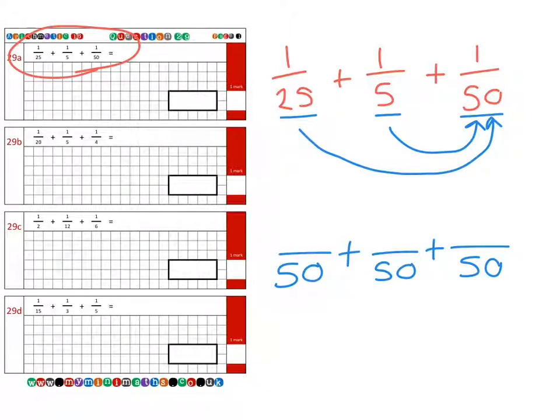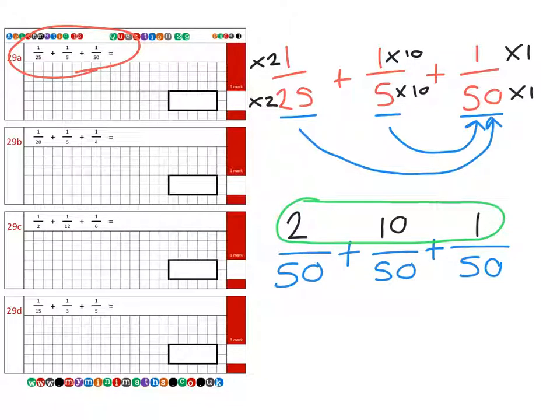Now, if we look at the first fraction, we multiply the 25 by 2 to get to 50, so we need to do the same with the top. So that's a 2 which goes on here. Then the second fraction, which we multiplied by 10 to get to 50, we do the same with the numerator. So we have a new numerator of 10. And the third one already is 50, so we've times by one, which is the same with the top, so it's one. And when we add together all three of these numerators, we end up with 13 over 50 as our final answer.